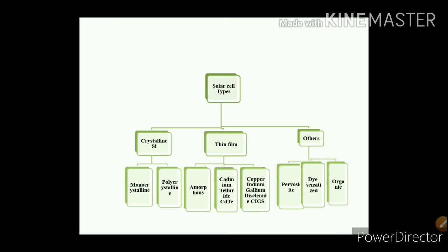This hierarchy shows the solar cell types, grouped into three categories. First is crystalline silicon, second is thin film, and the third contains solar cells which are in the developing phase — some are developed but not yet widely available in the market. Crystalline silicon and thin film are very popularly used in the marketplace as well as for practical implementation.